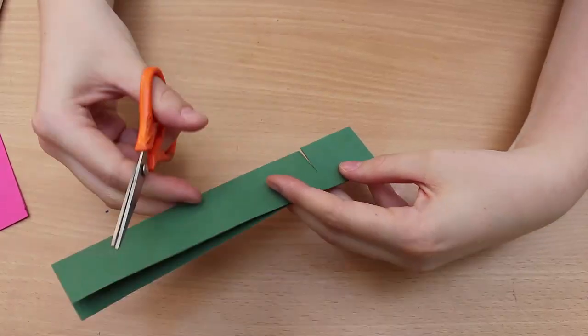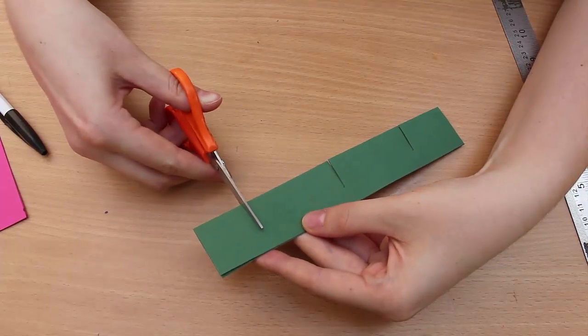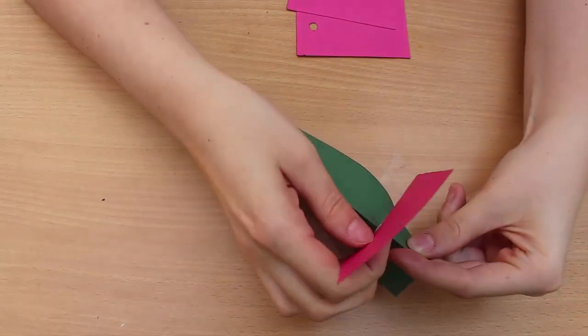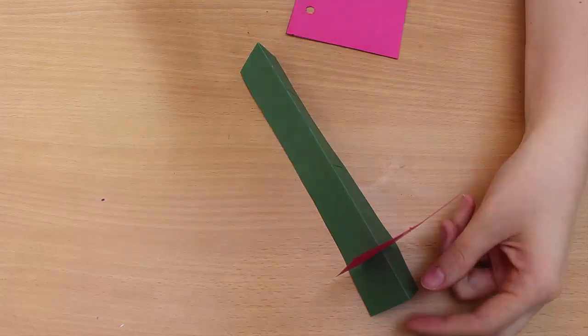Now with the help of scissors, make three half cuts in the strip of paper. Now that the base is ready, you can insert the cards into it.